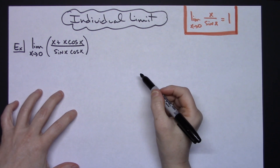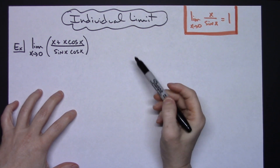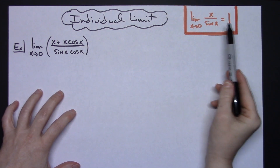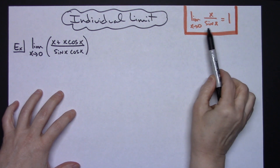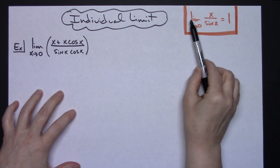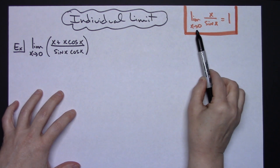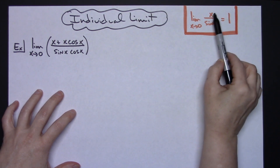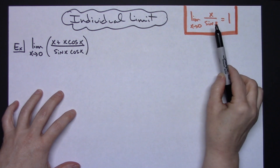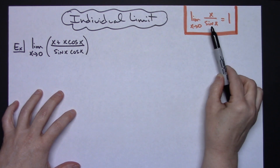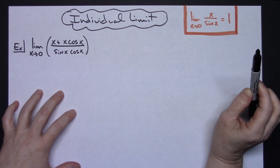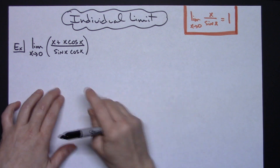In this video I'm going to work through an individual trig limit. We are going to take advantage of this property: the limit as x approaches 0 of x over sine x, and the fact that we know that's going to be equal to 1.